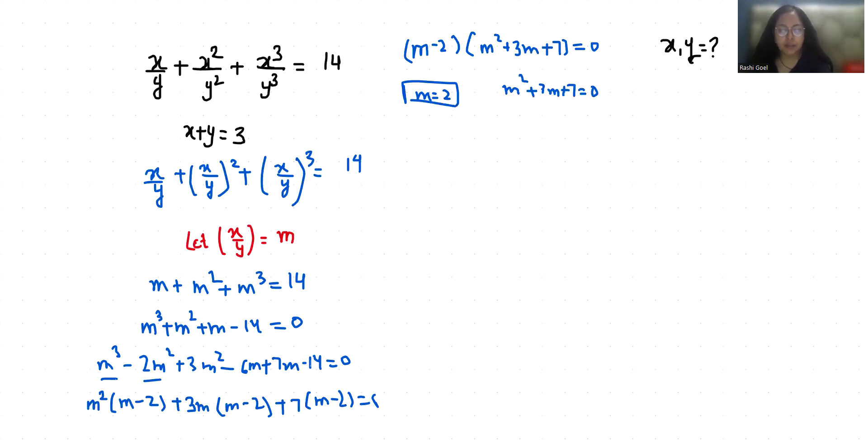So m equals minus 3 plus or minus square root of 3 squared minus 4 times 1 times 7, all over 2 times 1. That's minus 3 plus or minus square root of 9 minus 28 over 2, which gives minus 3 plus or minus square root of minus 19 over 2.